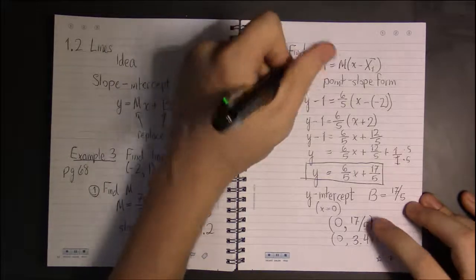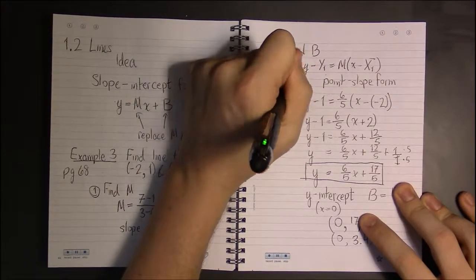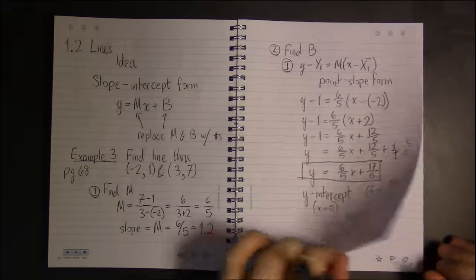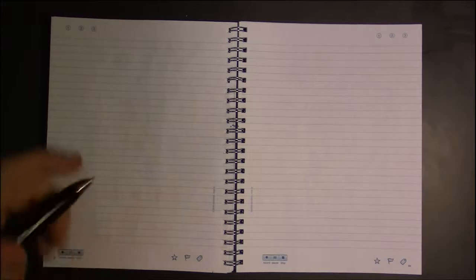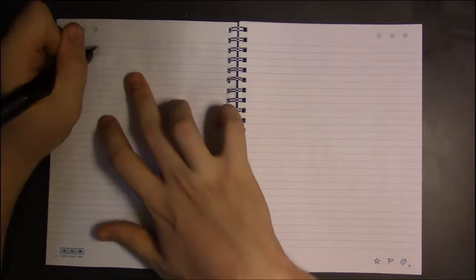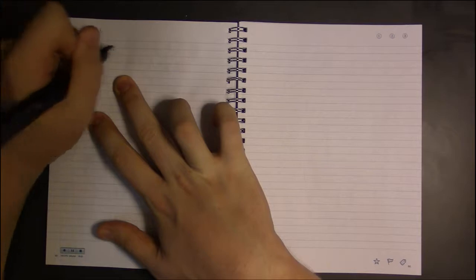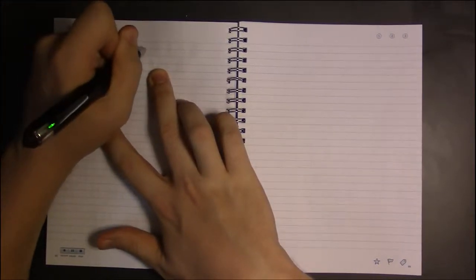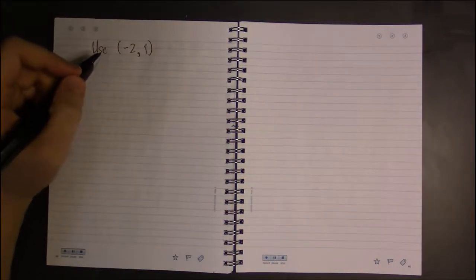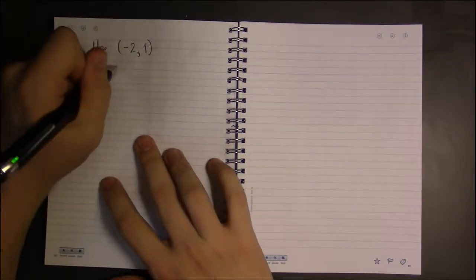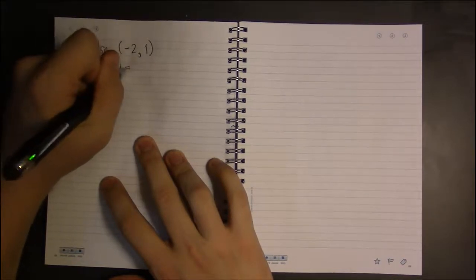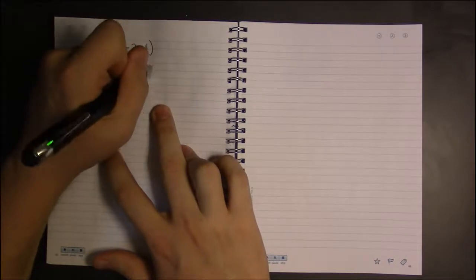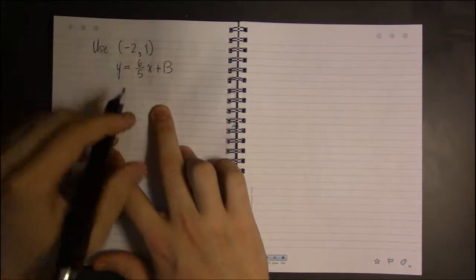I said this was one way to solve this. Another way, which is rather popular, is to just plug in or use one of the points, say, (-2, 1). Use it by plugging it into the equation, y equals, we know what m is, 6/5 x plus b.